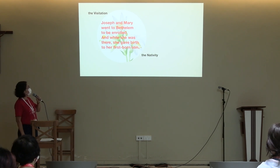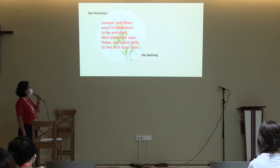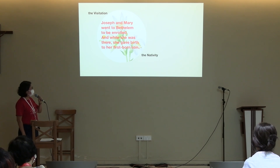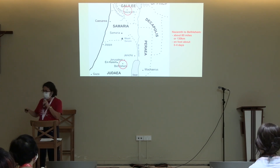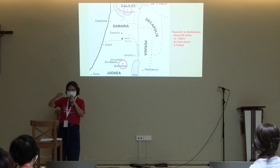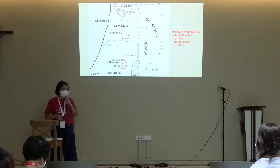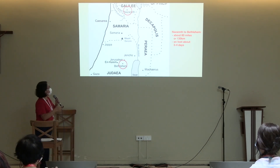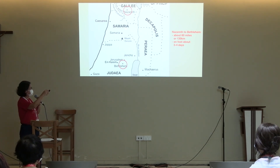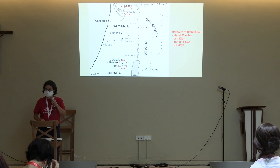Moving to the gap between the Visitation and the Nativity. Joseph and Mary went to Bethlehem to be enrolled, and while she was there she gave birth to her firstborn son. By now they were already married. Did Mary and Joseph have a proper marriage ceremony? They were living together. They had to travel back down to Bethlehem — about the same distance. But this time the scenario is different: heavily pregnant.